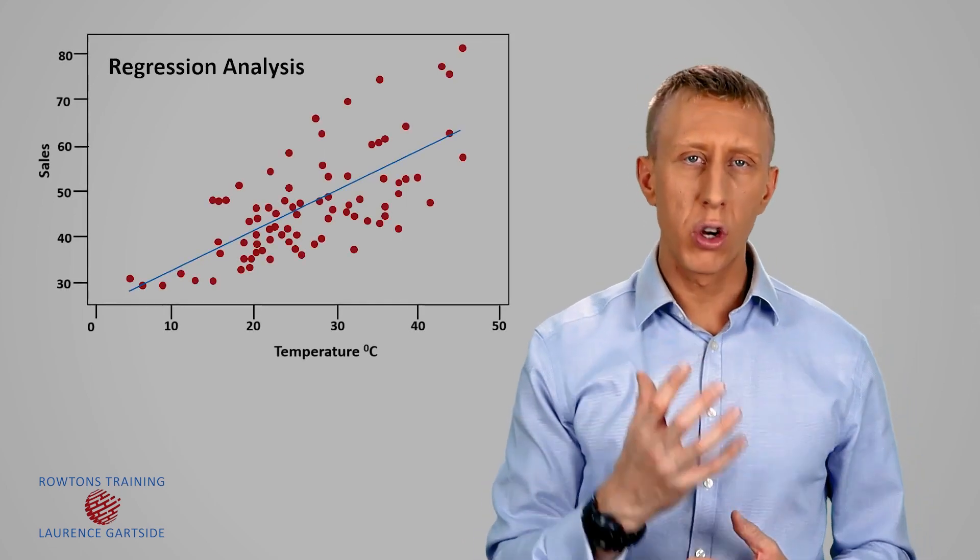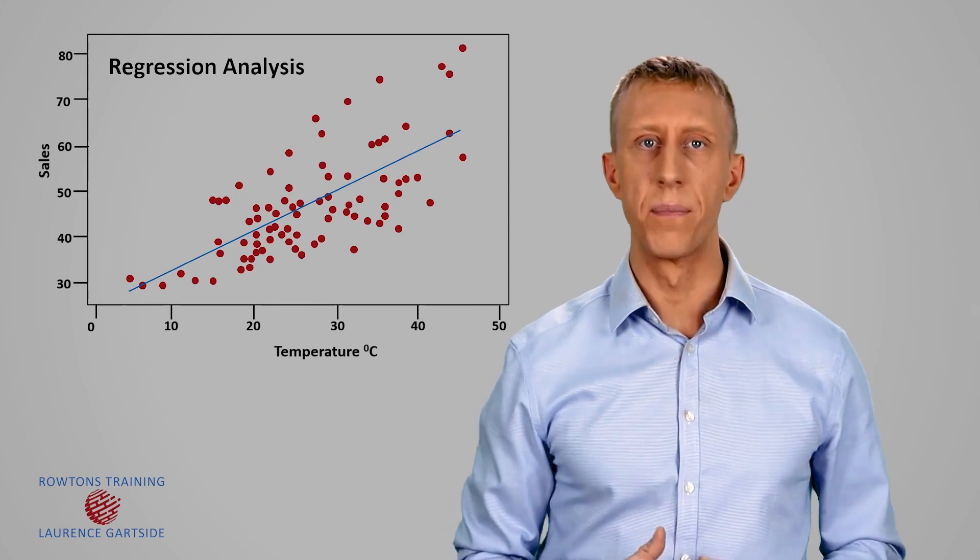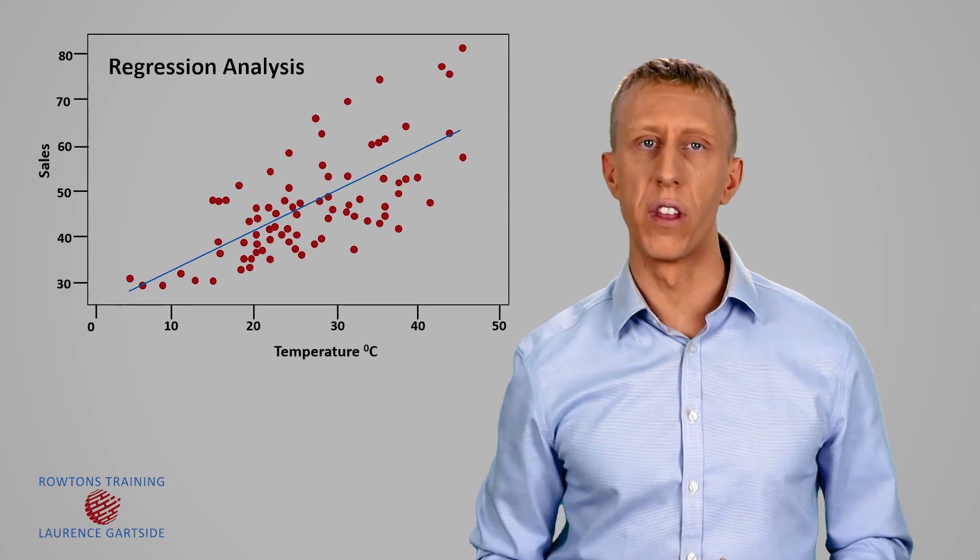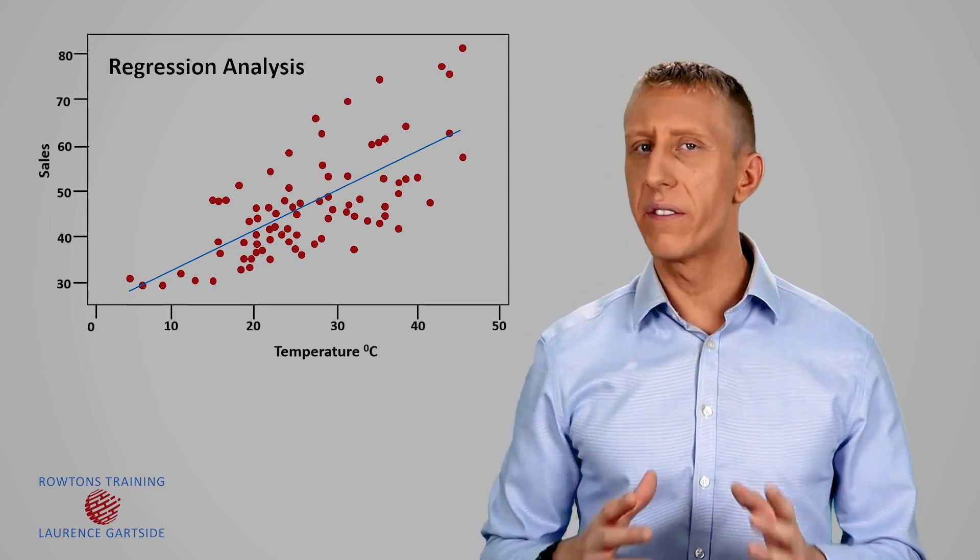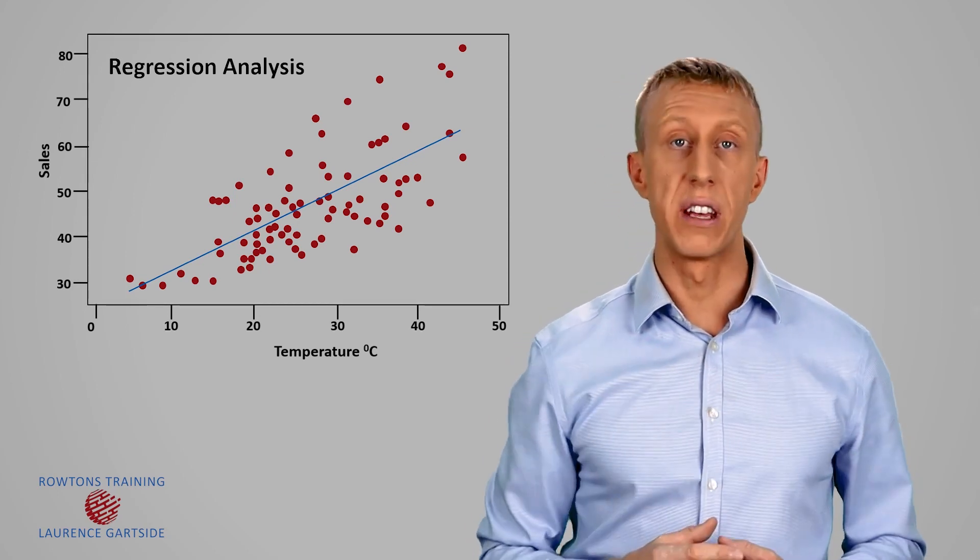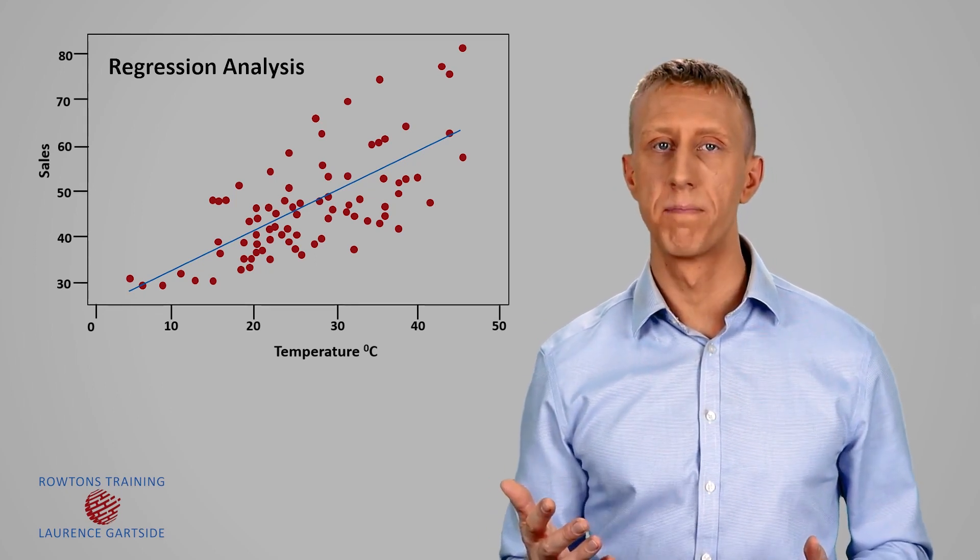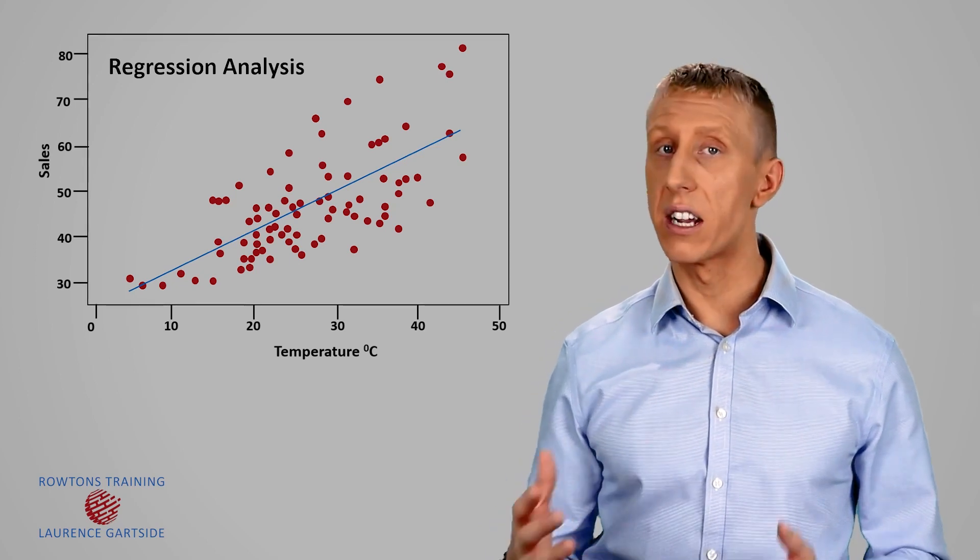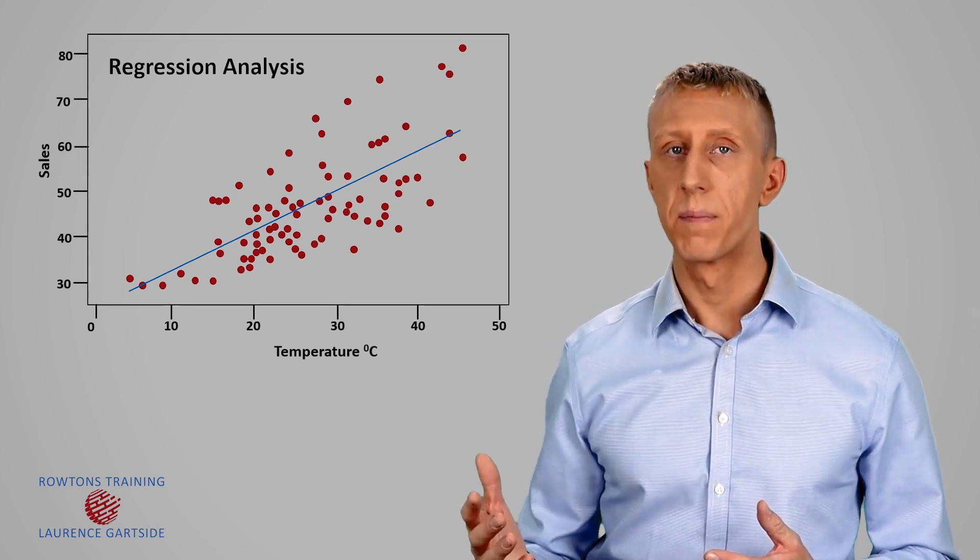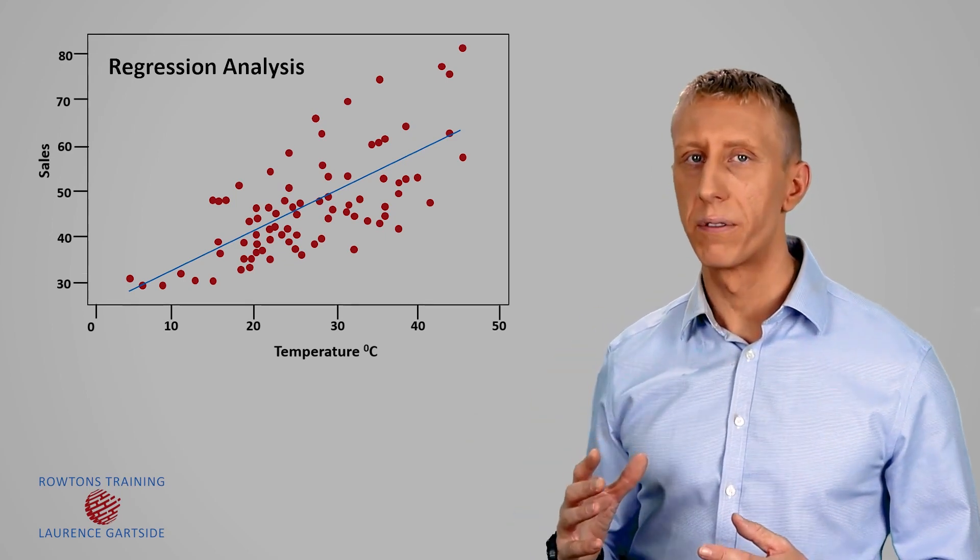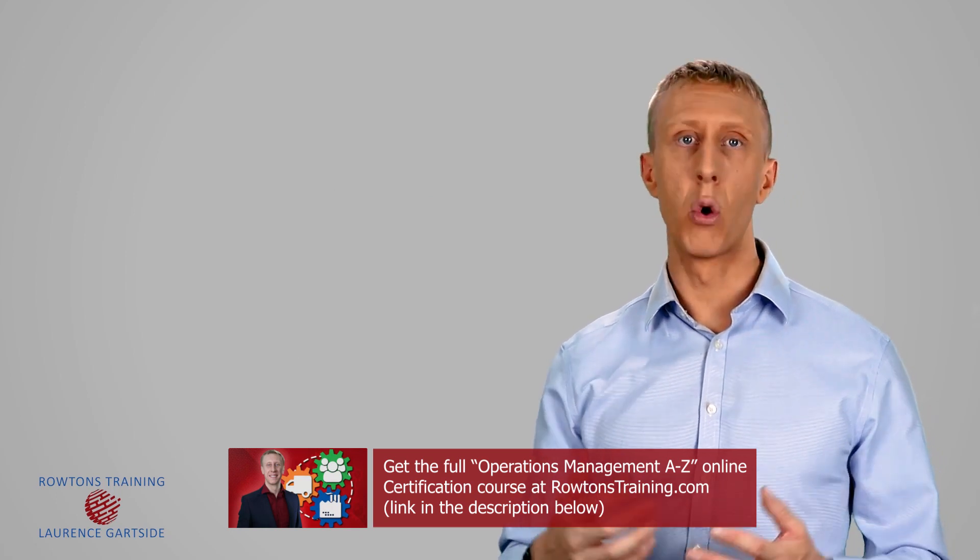First, we need to be recording historical data. We need a database of the historical weather and how much ice cream we sold on those days. With that information, we could plot the historical daily weather temperature against ice cream sales. Maybe we're lucky enough to get a kind of line of best fit and we can see a positive correlation on the scatter graph. And we can use that to help predict ice cream sales tomorrow or next week based on the weather forecast.